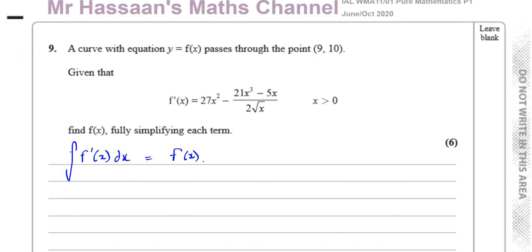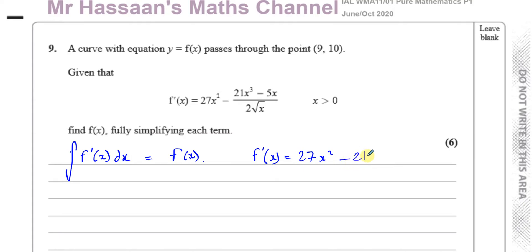I need to integrate this function, but first I have to rewrite it in a way that is more friendly for integration. I need to split this into separate terms and write the x terms as one term in the numerator. So I can write 27x², which is fine to integrate, but the fraction terms I have to split up: 21x³ over 2 times x to the power of a half.